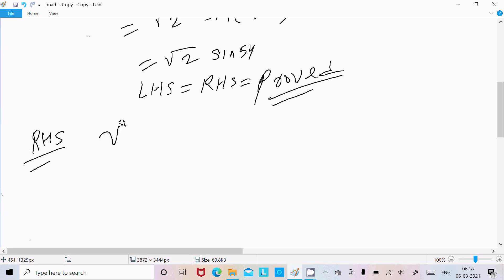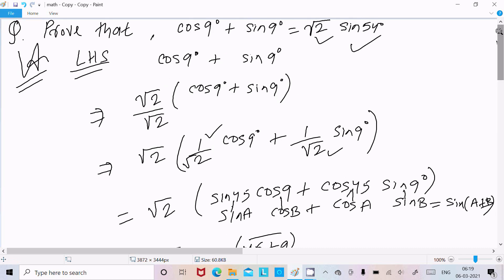So RHS, √2 sin 54. So here we can write √2 sin 54, so this we can break into two parts, so 45 and 9.